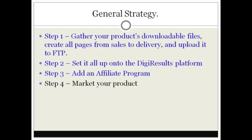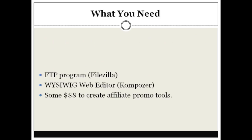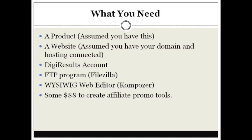The items in blue are what we'll cover in this video course. Step four — marketing your product — you'll handle yourself, but with an affiliate program added it's going to help because you'll have other people promoting it, they'll get a cut of the sales, they'll be happy, and they'll promote your product over and over again. For what you need: I assume you already have a product and a website with your domain connected to your hosting.